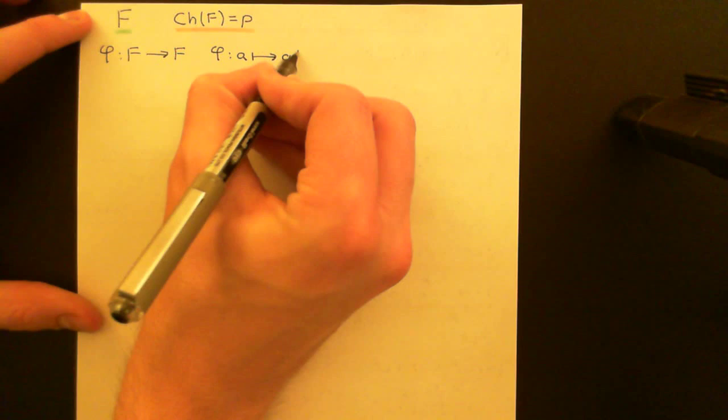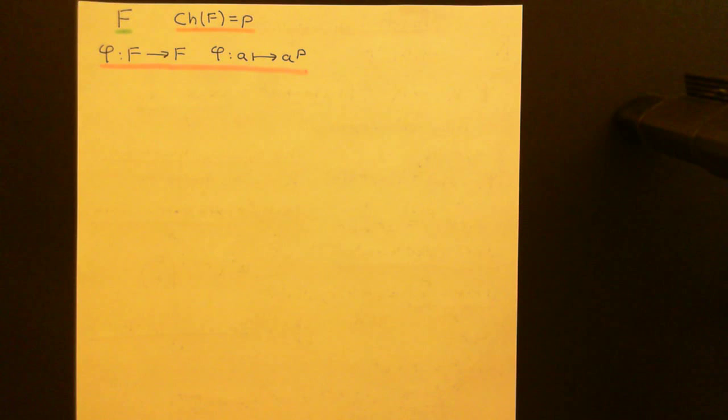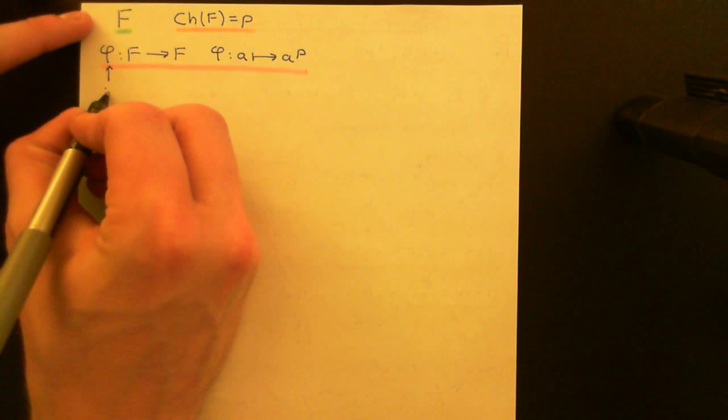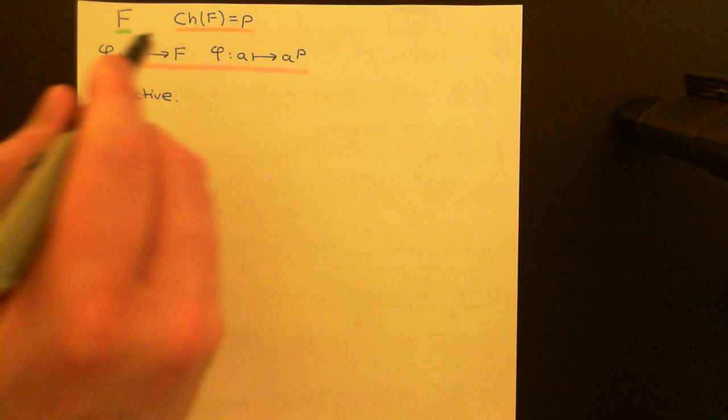Something really nice happens when we talk about the Frobenius endomorphism specifically on a field: we can instantly conclude that it's an injective map. So whereas we couldn't conclude this previously, we can now say this ring endomorphism is an injective ring endomorphism. Elements in the image of the Frobenius endomorphism have only one element in the domain being mapped onto them. You can conclude injectivity if you're working with a field of characteristic a prime natural number.